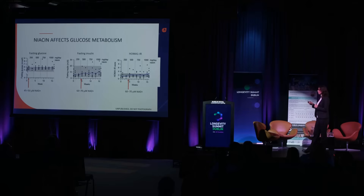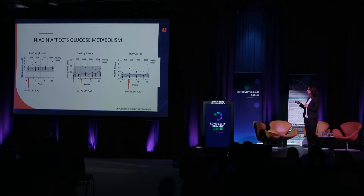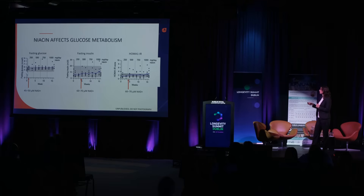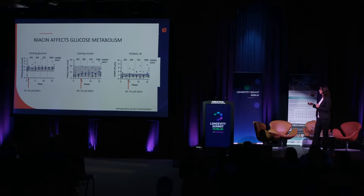Looking in more detail week by week at where NAD levels go and how glucose metabolism develops, fasting glucose, fasting insulin, and the HOMA index all increase significantly from the point where NAD+ in blood reaches close to 50 micromolars. The insulin also starts to increase significantly from that threshold onwards.